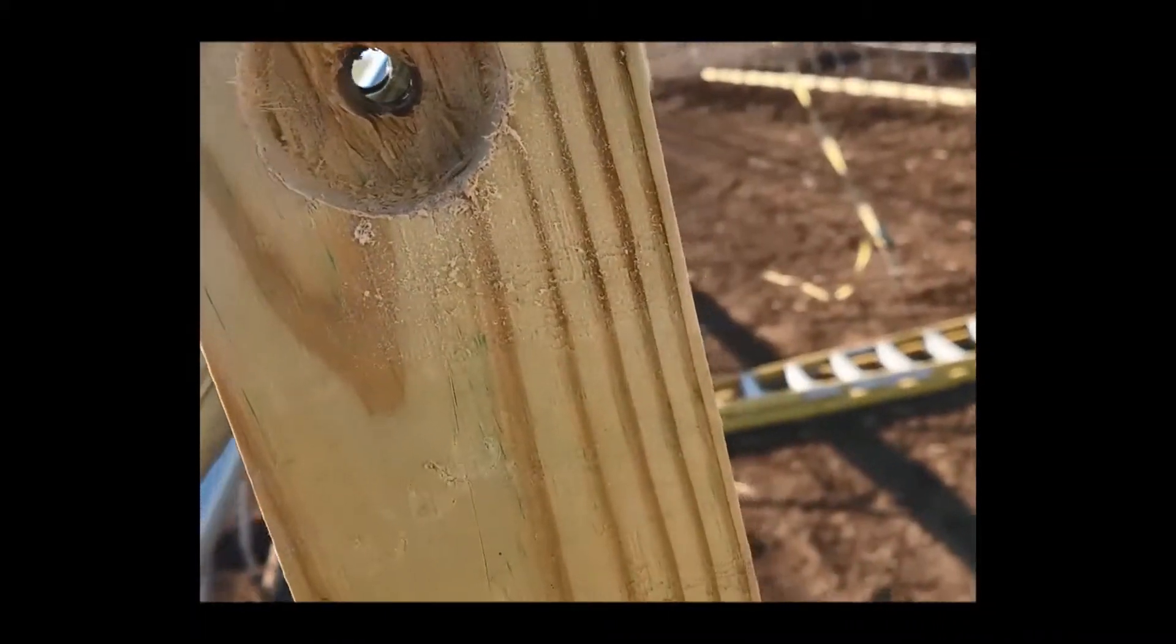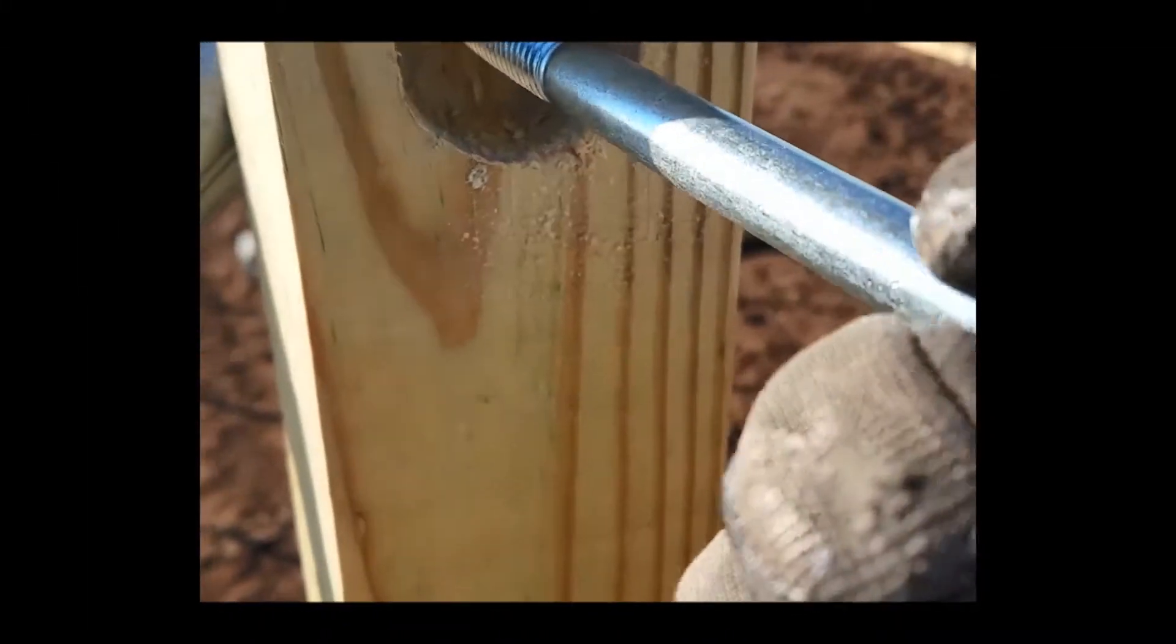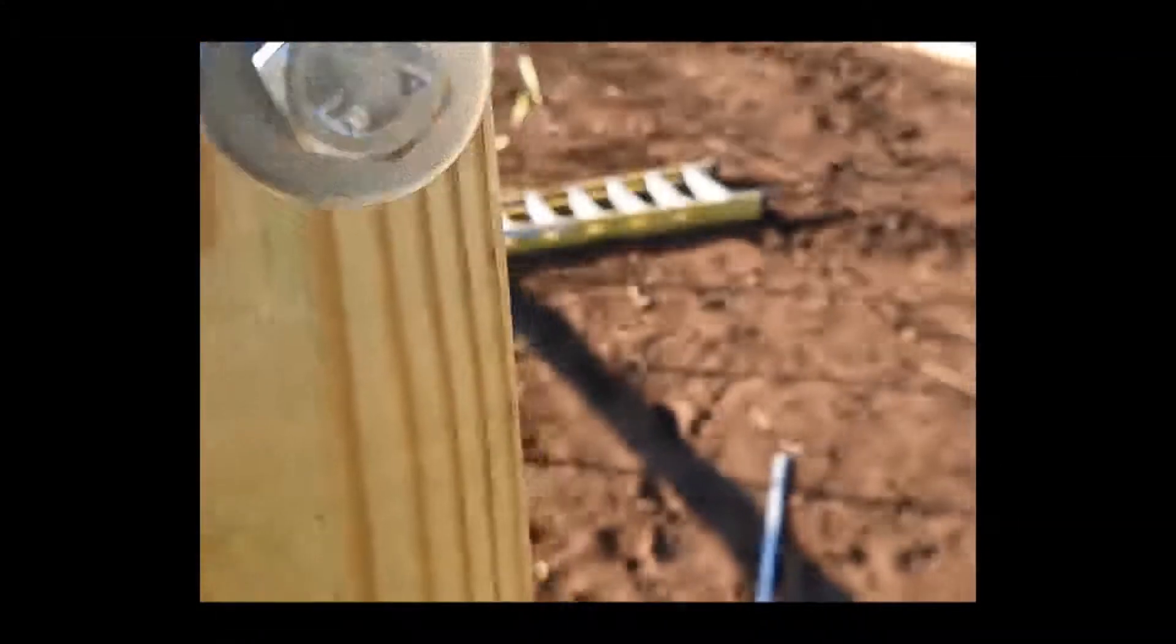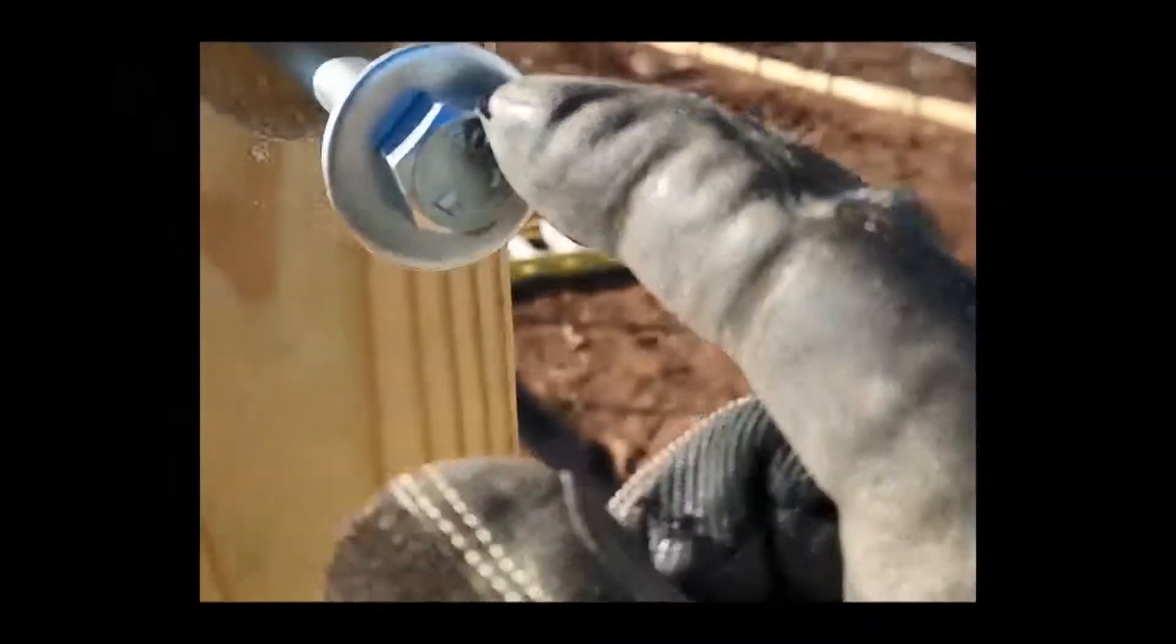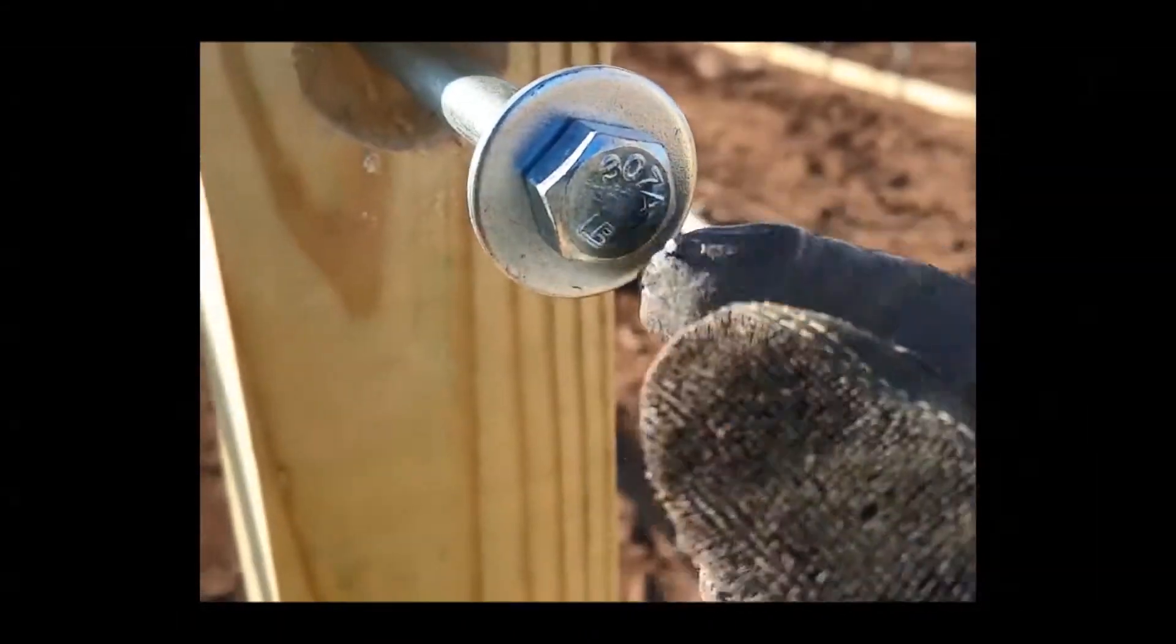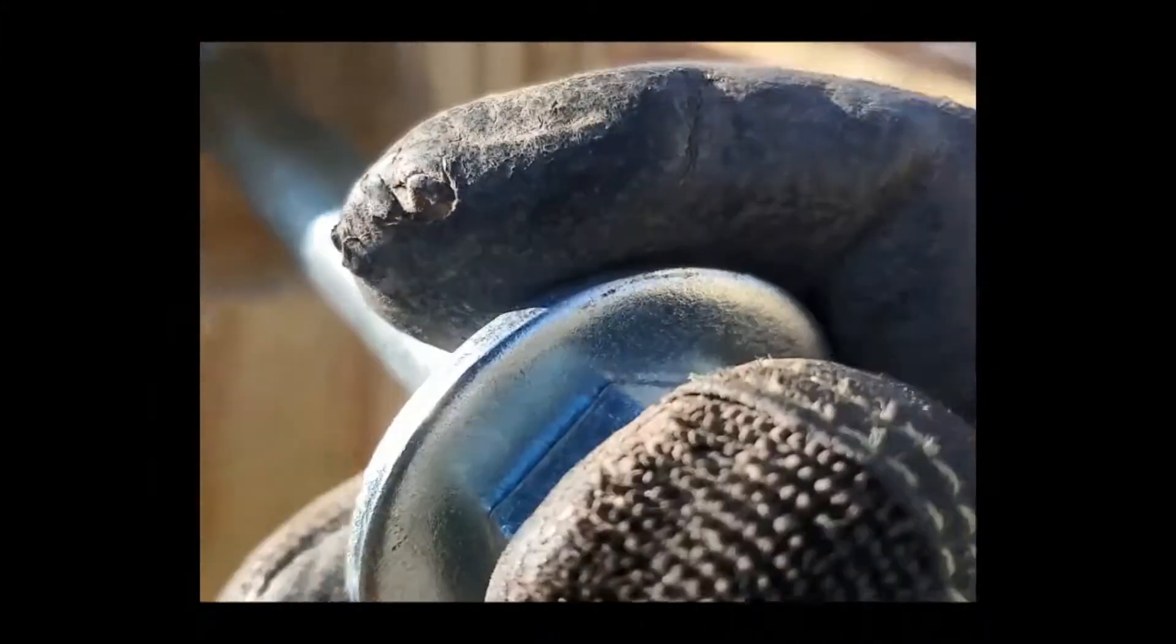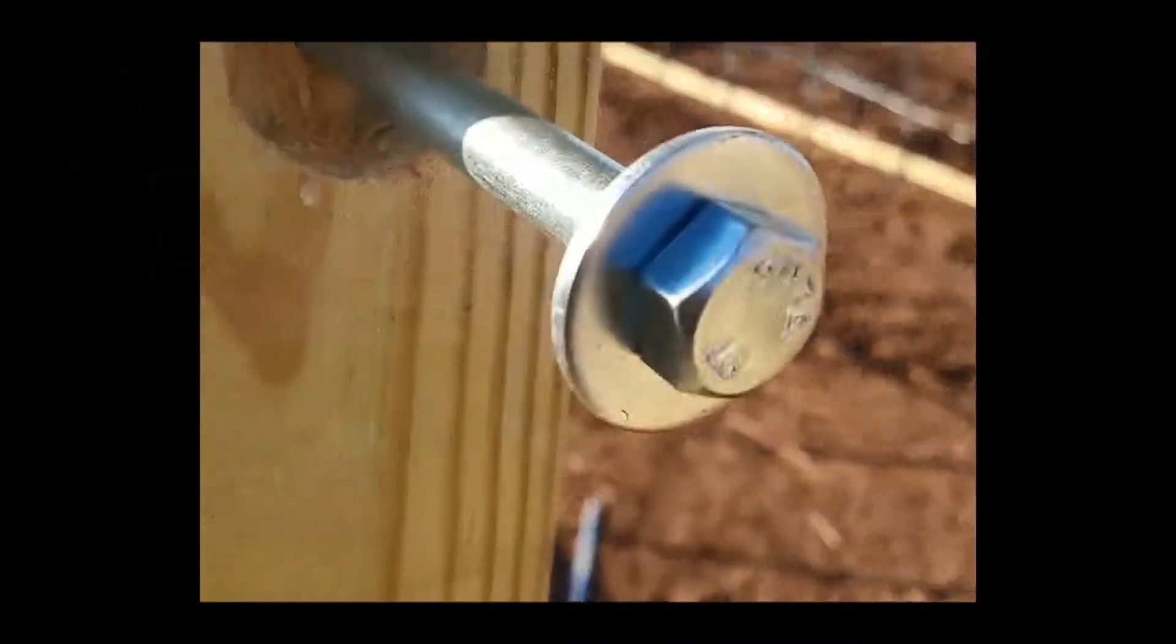All right, once we get the hole drilled, then we'll put a washer on it. This is a five and a half inch bolt. The plans call for all-thread, but it seems like these bolts are a lot easier to use because it's got the head on it. All-thread, you gotta put two nuts together, you gotta countersink this a lot more. So we figured we'd do it like this and it'd be a little better. So pop this guy in, put some